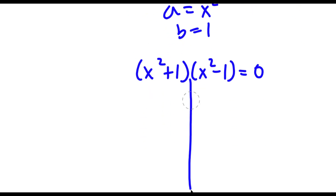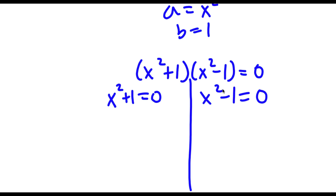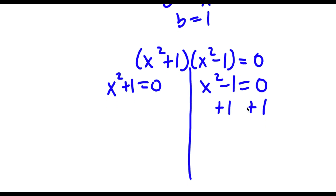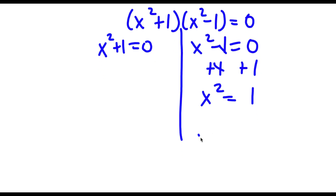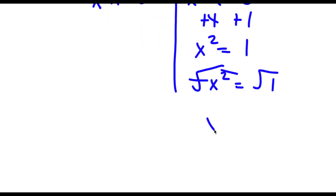So now this gives me two equations. I have x squared plus 1 is equal to 0, and I have x squared minus 1 is equal to 0. Let's first start with x squared minus 1 equals 0. I'm going to add 1 on both sides — these two cancel out and I'm left with x squared is equal to 1. Now I'm going to take the square root on both sides. These two cancel out and I'm left with x is equal to positive or negative 1.